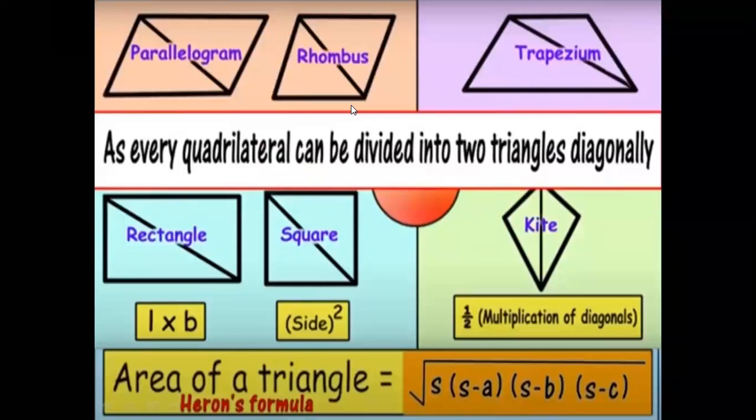Dear students, Heron's Formula is just not limited to finding the area of triangles. It can also be used to find the area of different quadrilaterals, as every quadrilateral can be divided into two triangles diagonally.